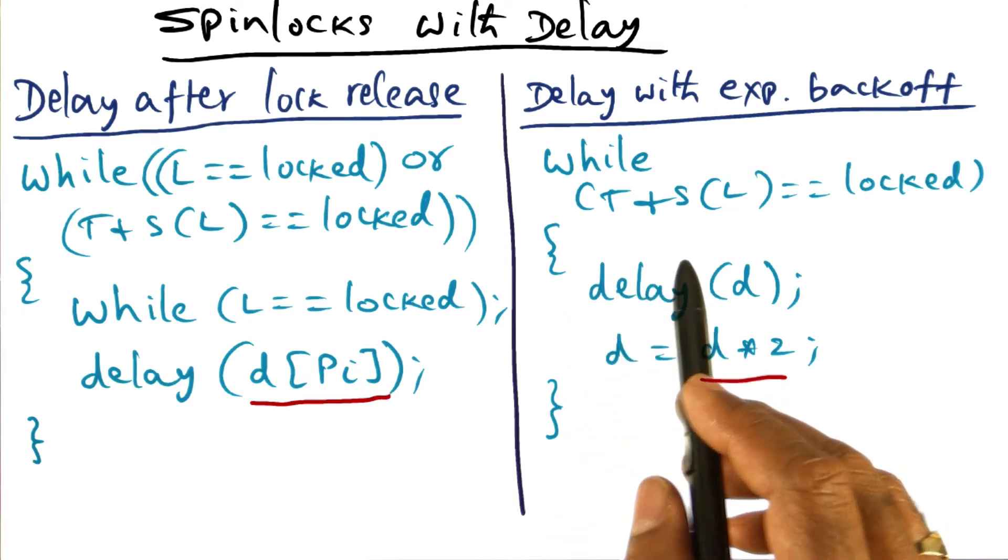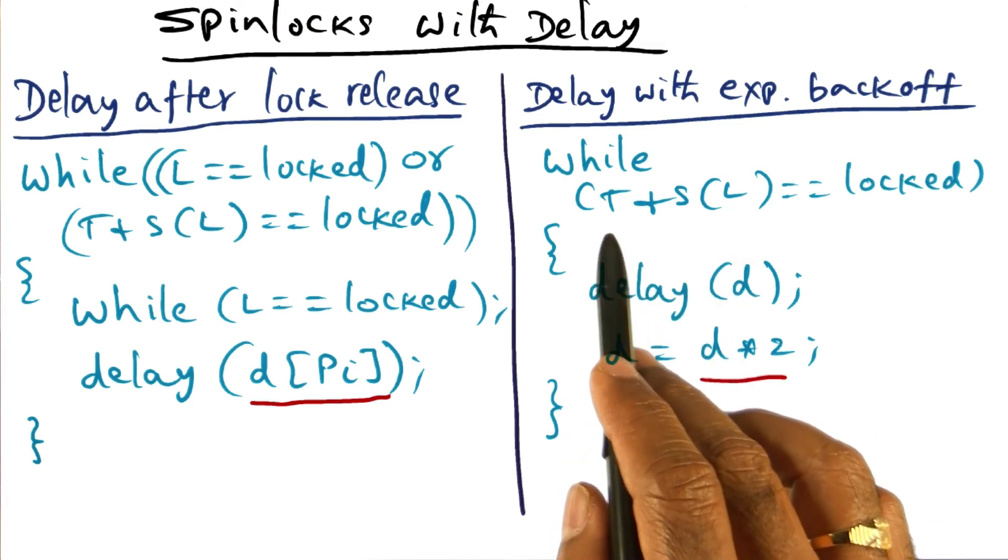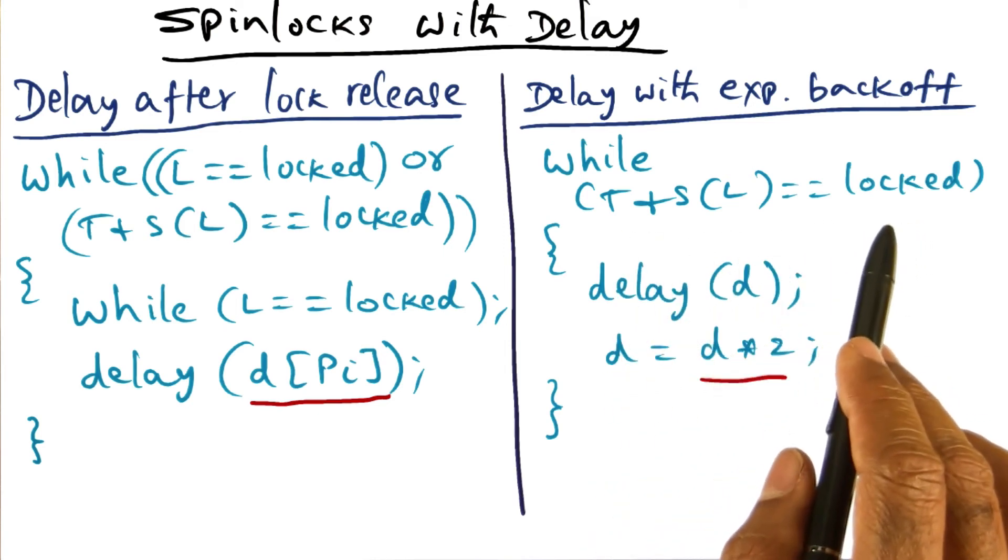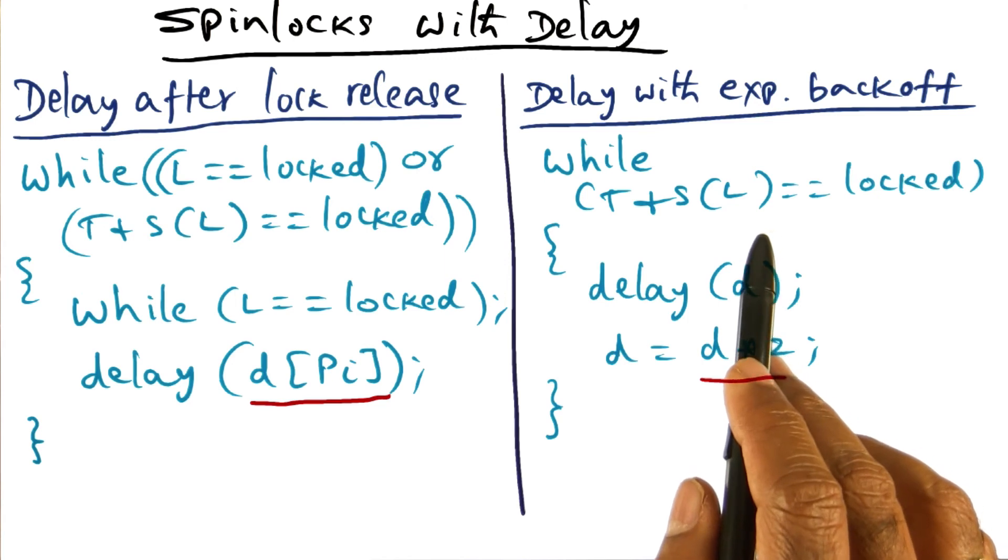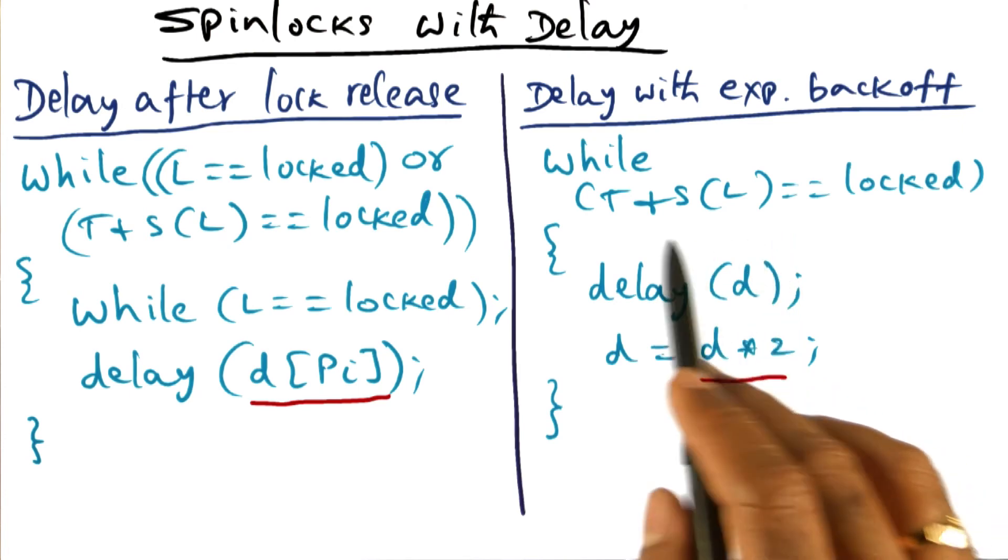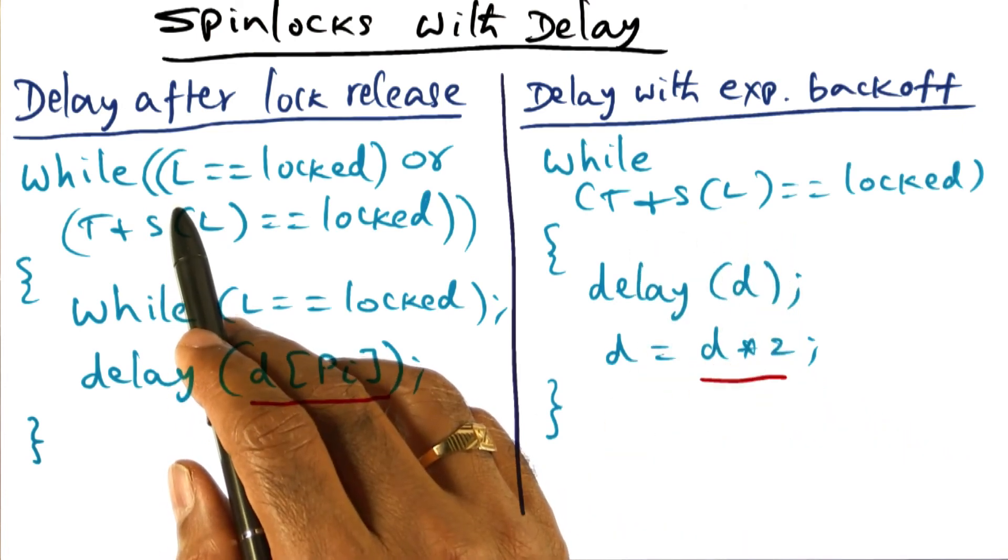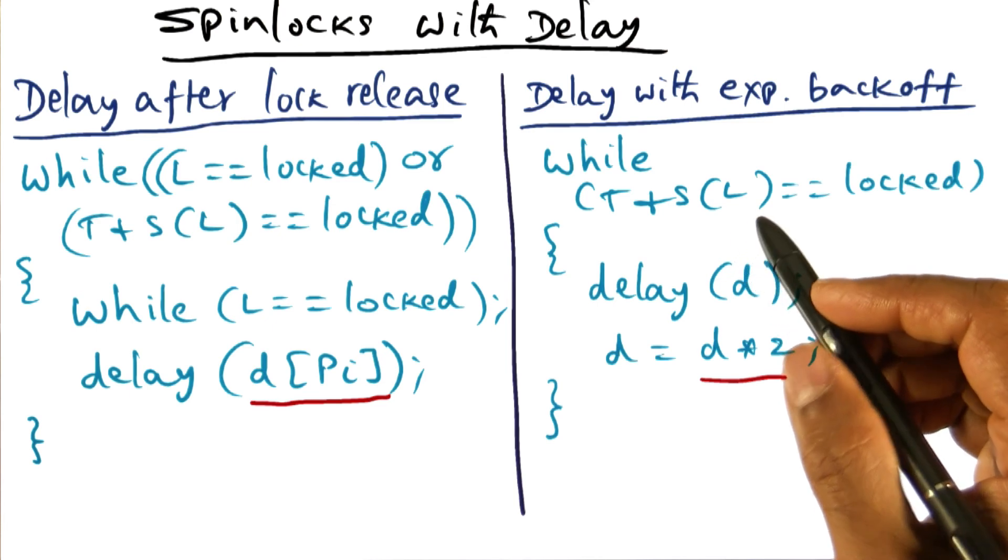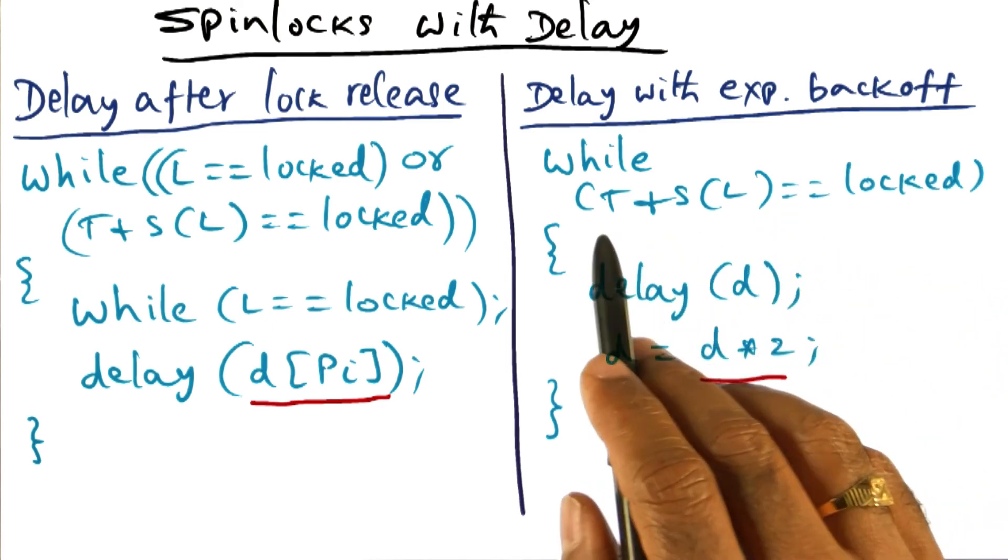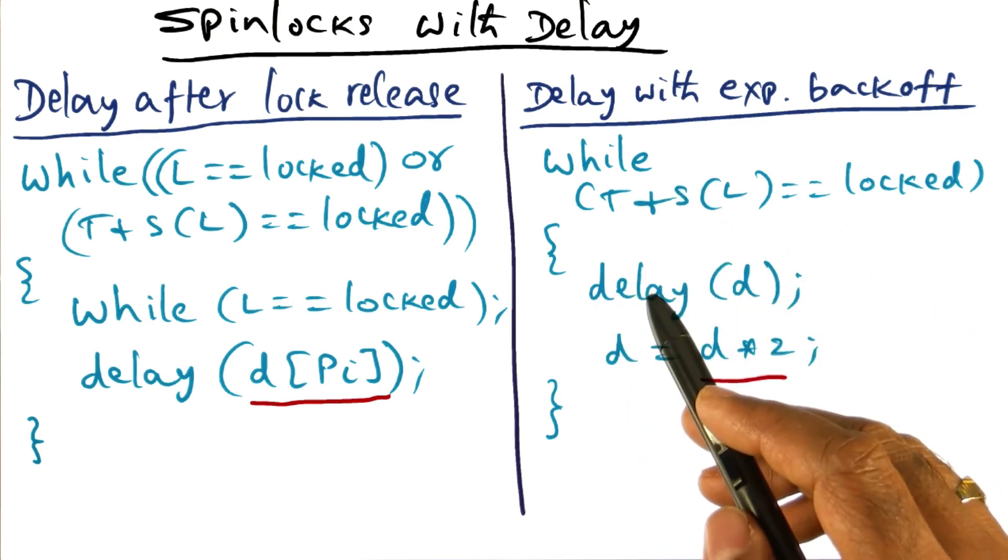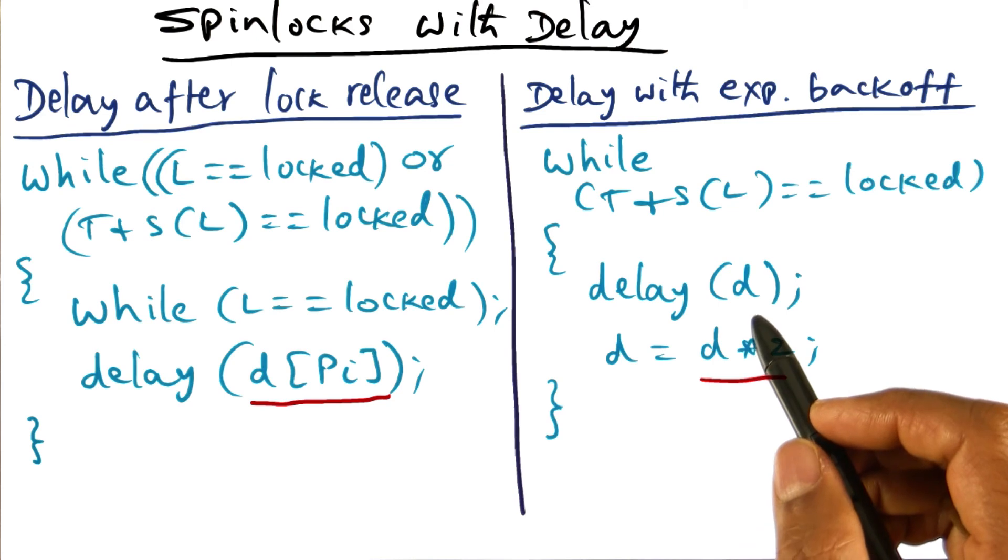Now, one nice thing about this simple algorithm that I've shown you is that I'm not using the caches at all. And if the processor happens to be a non-cache coherent multiprocessor, this algorithm will still work. Because we're always using test and set, and not using just loading from the memory. Because if it is not a cache coherent multiprocessor, your private cache is not going to be coherent with respect to memory. And so you have to execute test and set, but you don't want to do it all the time. And the delay makes sure that you can reduce the amount of contention on the network.